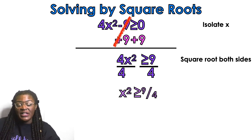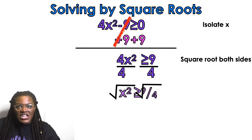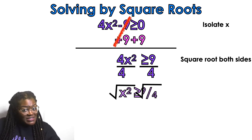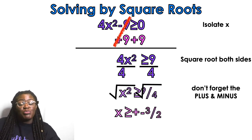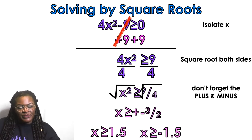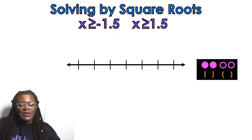I take the square root of x squared and the square root of 9 over 4. If the top number is a perfect square — and 9 is — and the bottom number is a perfect square — and 4 is — then the square root of 9 is 3 and the square root of 4 is 2. Don't forget your plus or minus: x is greater than or equal to plus or minus 3 over 2. We all know that 3 over 2 is 1.5, and negative 1.5. So those are the two values I'm going to use for the number line.